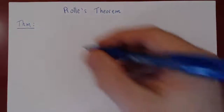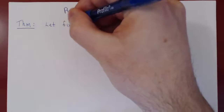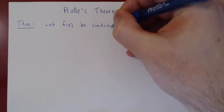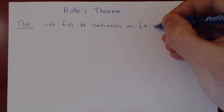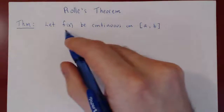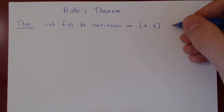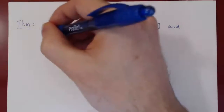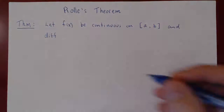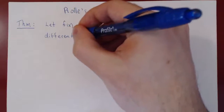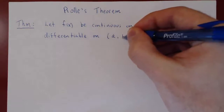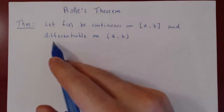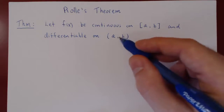Here's a statement of the theorem. We have a function — let f of x be continuous on the closed and bounded interval [a, b], where a and b are fixed real numbers and a is less than b. And assume it is differentiable on the open interval (a, b).